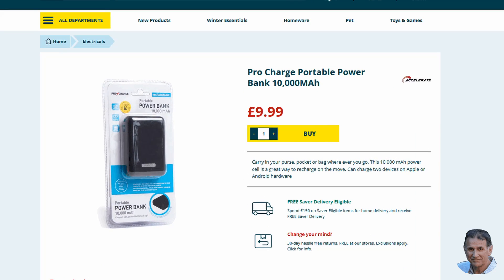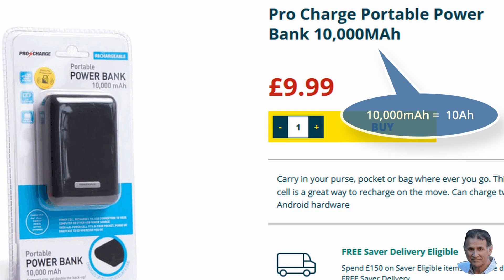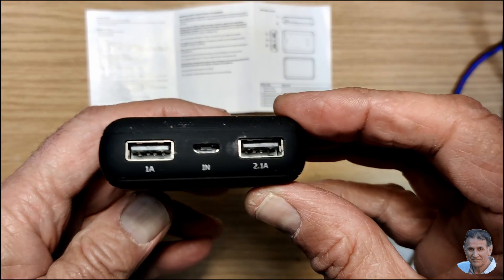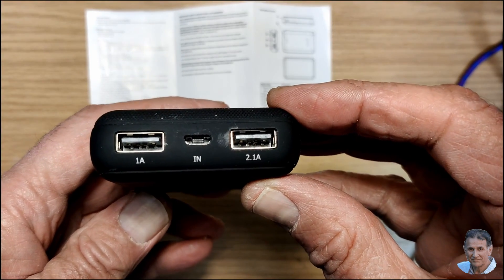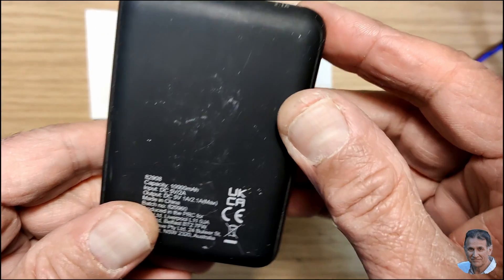This home bargains power bank is sold as 10 ampere hour, and to most people this indicates that it can supply 1 amp for 10 hours. But when I used it, it didn't even last half that time.